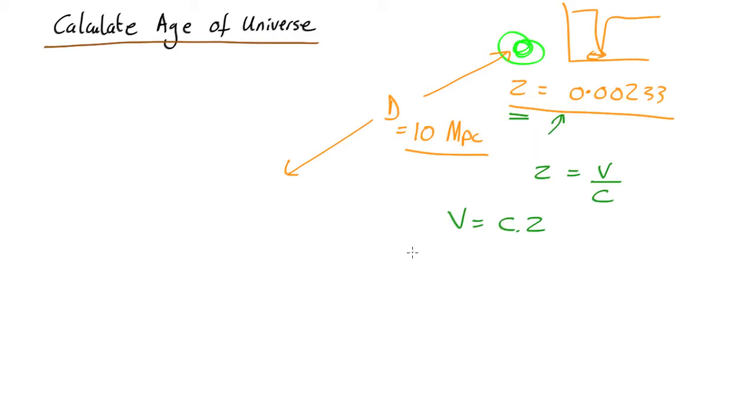Multiply this by the speed of light and we get a velocity of about 700 kilometers per second. So it's moving away from us at about 700 kilometers per second. If we extrapolate backwards, if it's going away from us at 700 kilometers per second, how far in the past would it have been here?